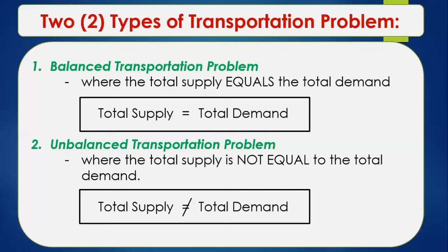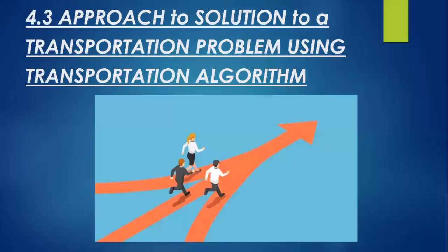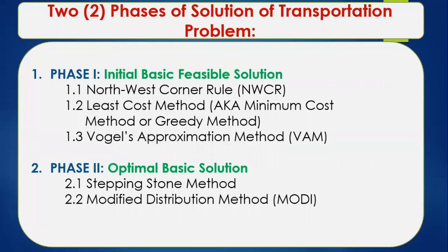There are different approaches to solving a transportation problem using a transportation algorithm. We have two phases: Phase One is about the initial basic feasible solution, and Phase Two is about the optimal basic solution. For Phase One, there are three different methods for establishing the initial basic feasible solution.